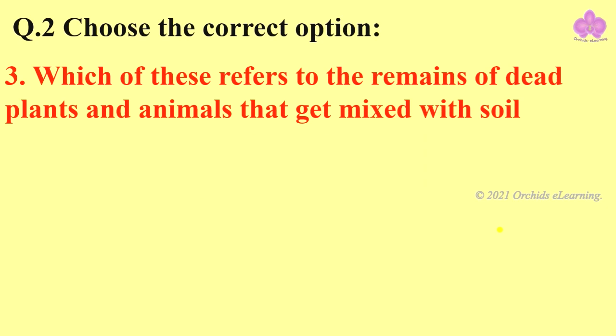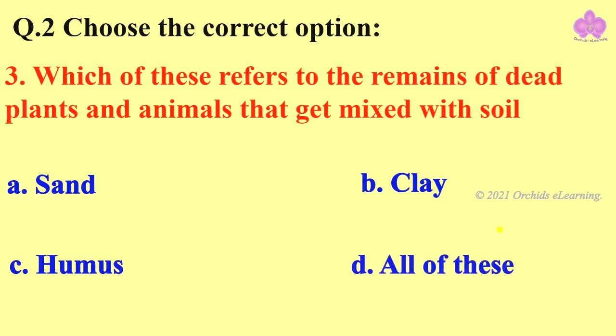Which of these refers to the remains of dead plants and animals that get mixed with soil? A: sand. B: clay. C: humus. D: all of these. And the answer is C, humus.